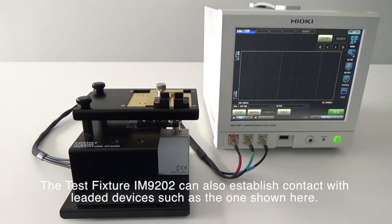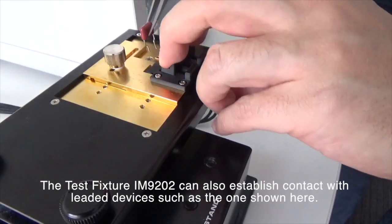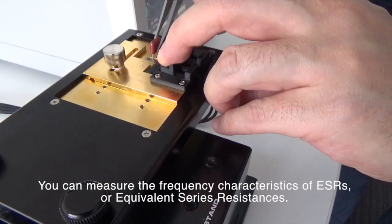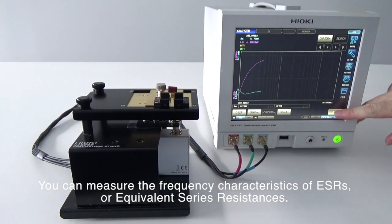The test fixture IM9202 can also establish contact with leaded devices such as the one shown here. You can measure the frequency characteristics of ESRs or equivalent series resistances.